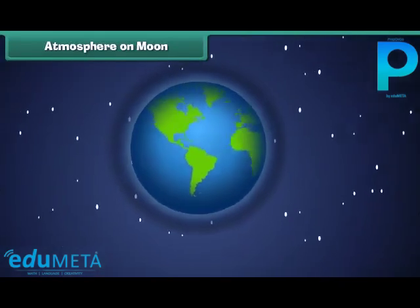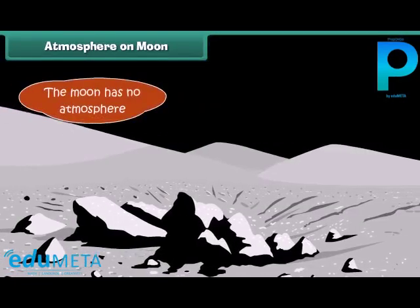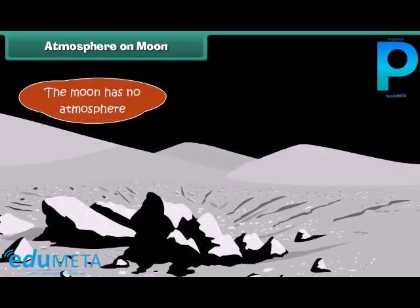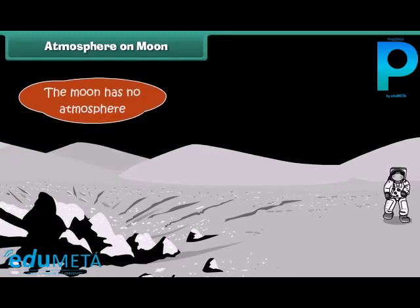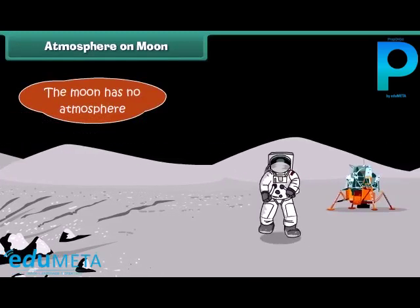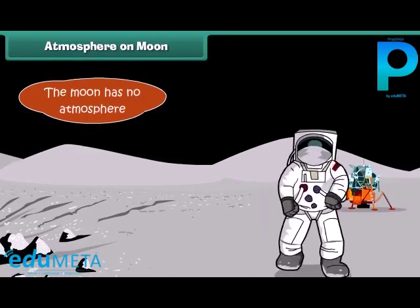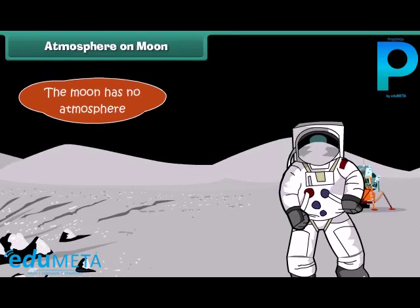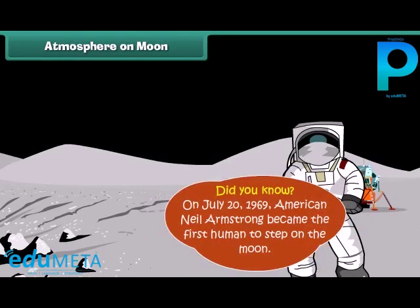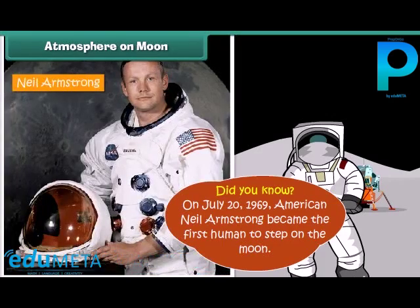Unlike Earth, the moon has no atmosphere, so the sky always appears dark even on the bright side. There can be no sound transmission on the moon since sound waves travel through air and the moon has no air. Did you know that on July 20, 1969, American astronaut Neil Armstrong became the first human to step on the moon?